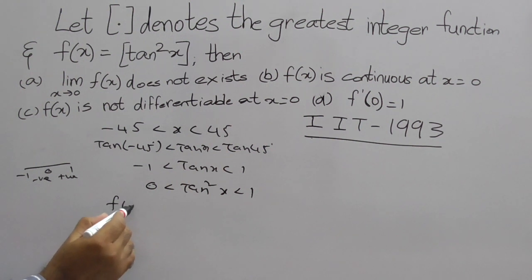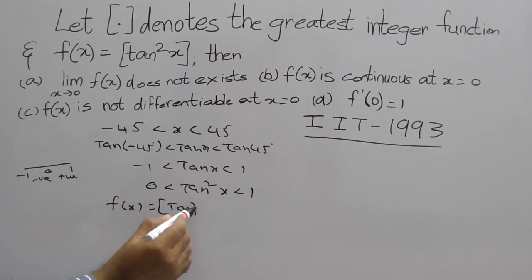So now, what is given f(x) here? f(x) is given as [tan²x]. Right? So [tan²x] again gives integers only. tan²x lies between 0 to 1.